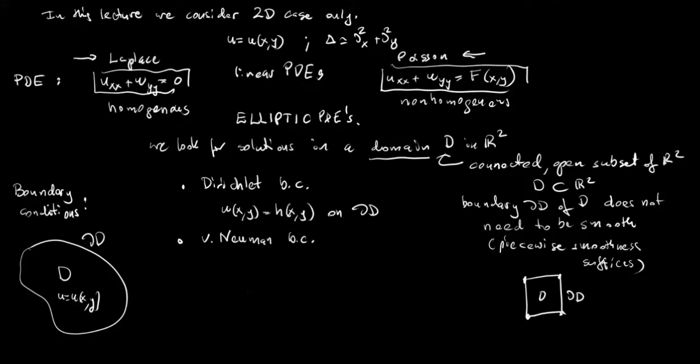The von Neumann boundary conditions request that the normal derivative of the function u is equal to a given function h on the boundary. So if we have our domain and its boundary, then at boundary we can consider normal vector to the boundary at every point. And now we consider the normal derivative which is the inner product of the normal vector with the gradient.